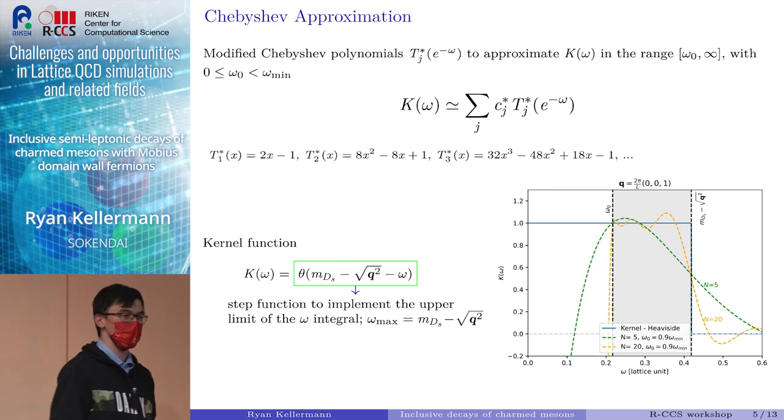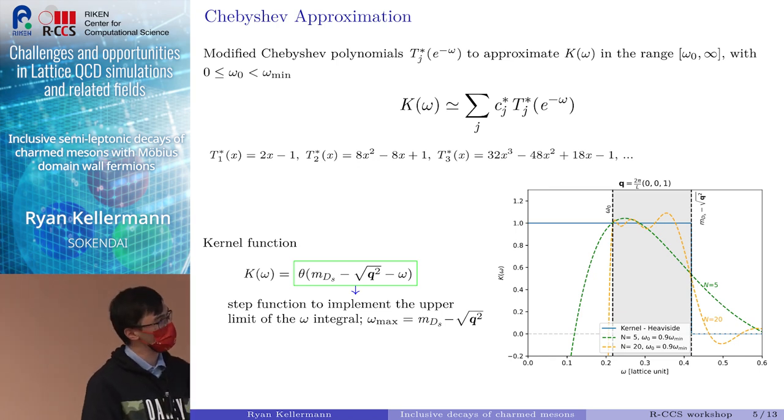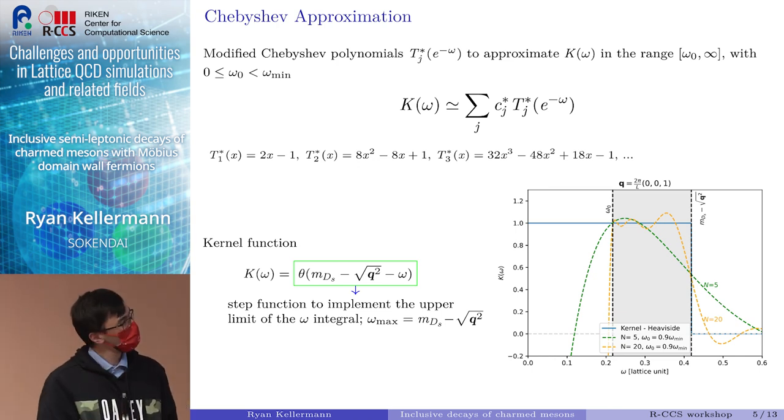Some intelligent people in the past have shown that the best polynomial approximation for a given range of omega can be given by the Chebyshev approximation. In our case, we are using the modified, or I guess in the literature they are mostly called the shifted Chebyshev polynomials, to construct an approximation of our kernel function which looks like this. I'm going to talk about the coefficients c_j in a little bit later.